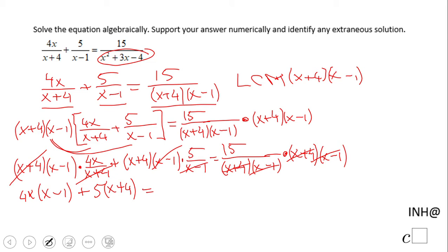So now if you take a look here, that is a good thing. We do not have any more fractions. We have a regular equation, it's going to be a quadratic but still not a rational equation. Distributive property: 4x squared minus 4x plus 5x plus 20 equals 15.